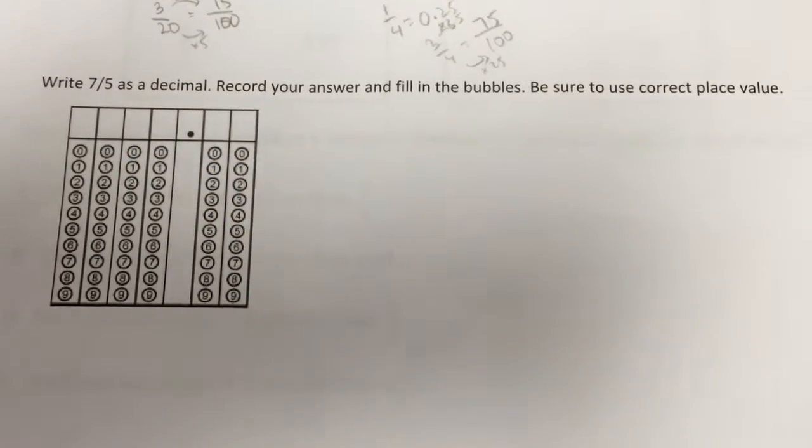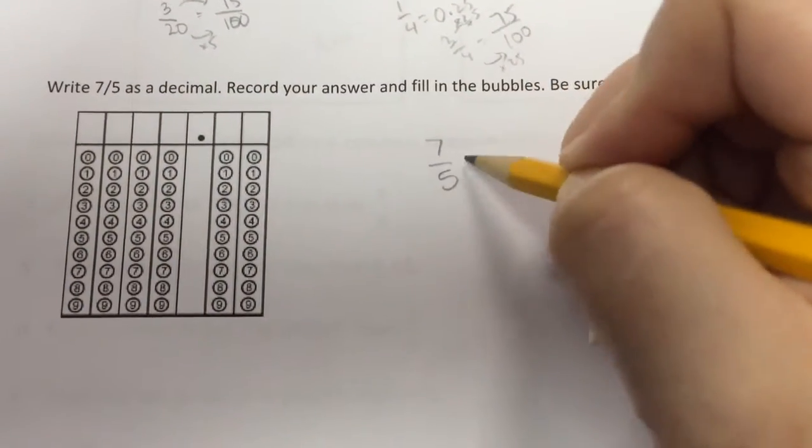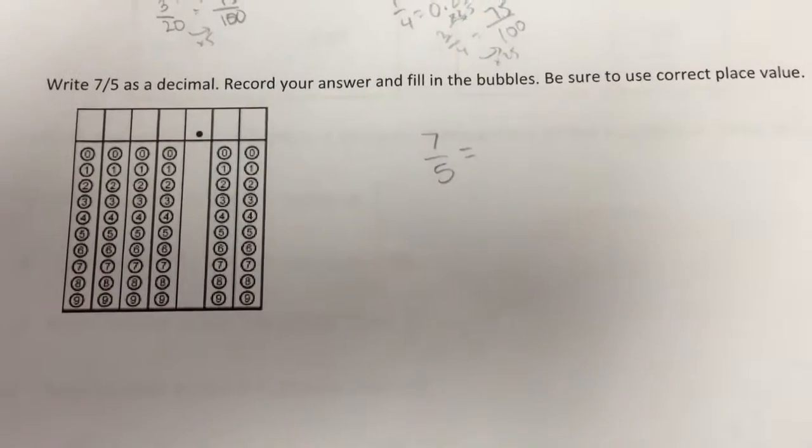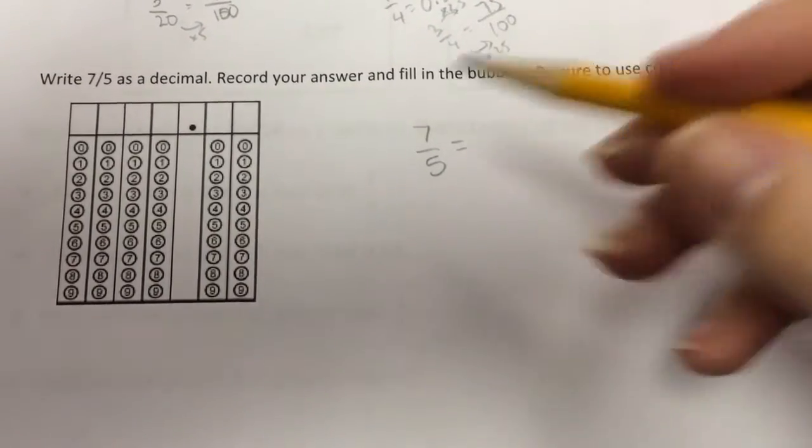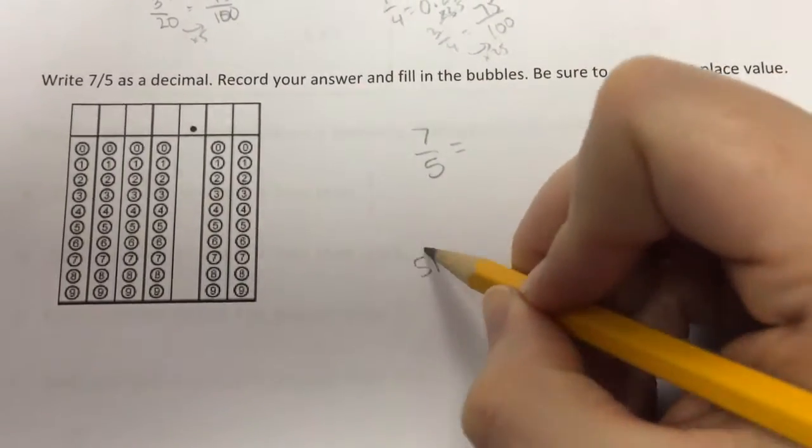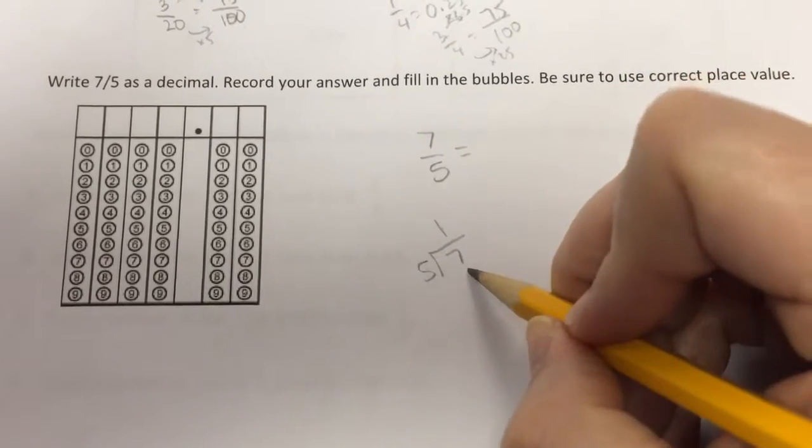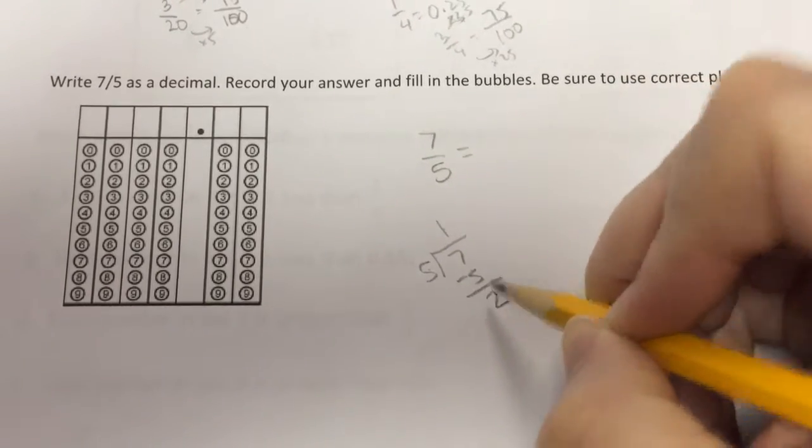Write seven-fifths as a decimal. So we're going to start with seven-fifths, and I'm going to turn it into a mixed number. Five goes into seven one time. One times five is five. Remainder of two.